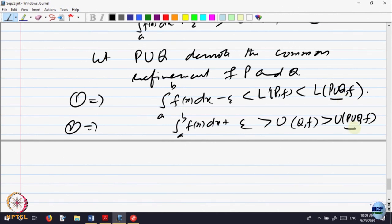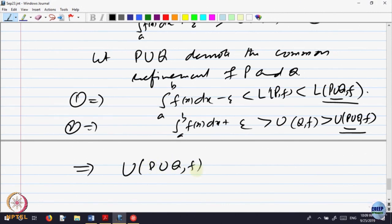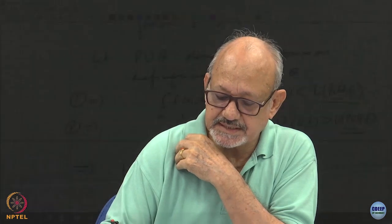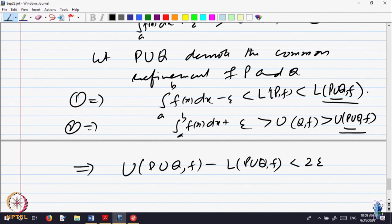Now the partitions are the same — P∪Q. I know that the lower sum is always less than or equal to the upper sum for a given partition. So from these two inequalities, U(P∪Q, f) minus L(P∪Q, f) is less than the quantity with plus epsilon minus the quantity with minus epsilon, which gives less than 2 epsilon.